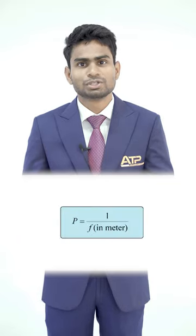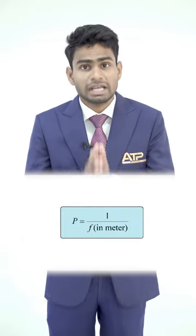Mathematically, we define power P equals 1 by f, which means the lens with the lesser focal length will be more powerful.